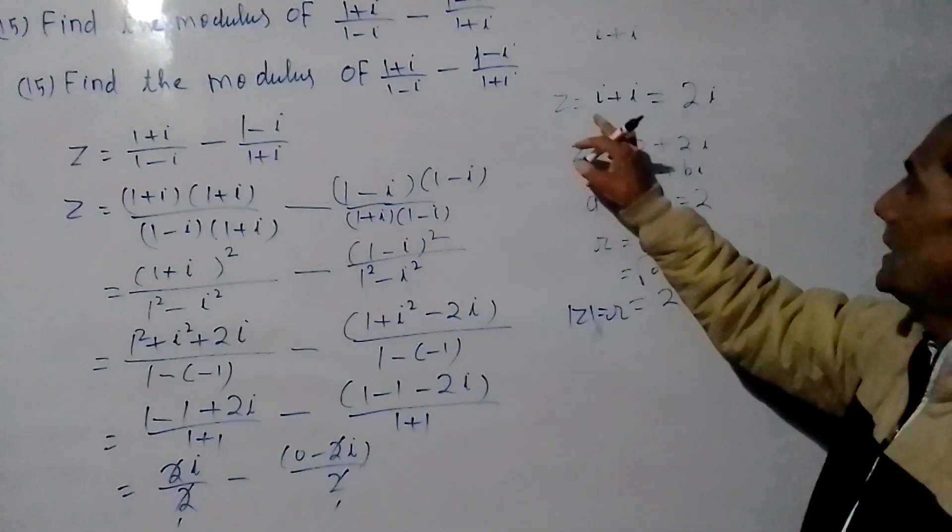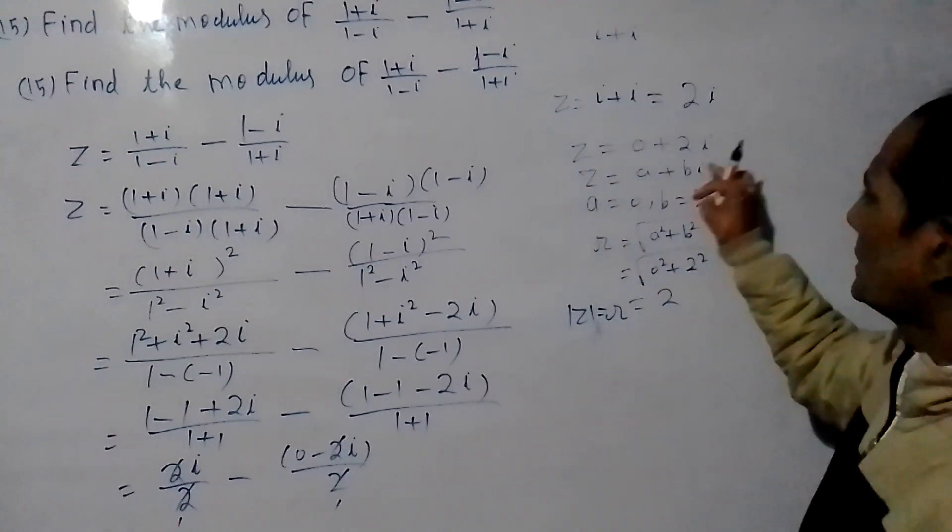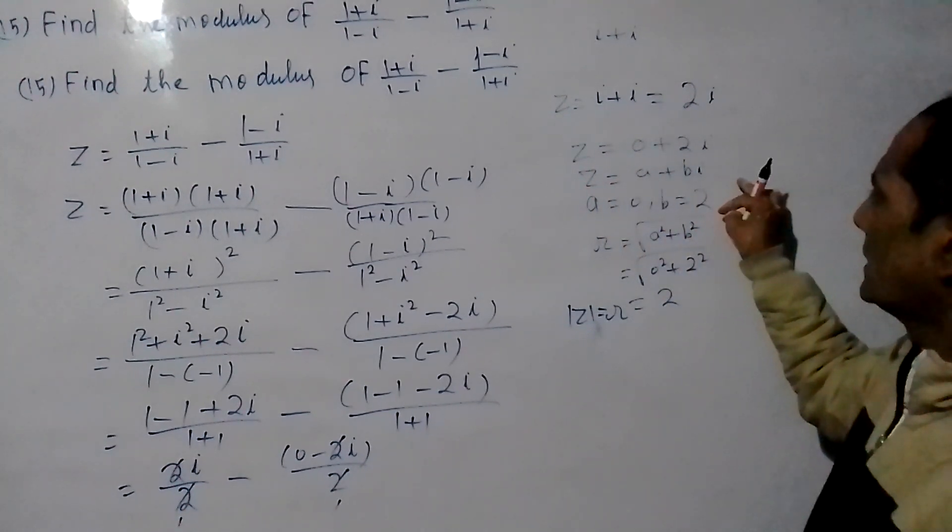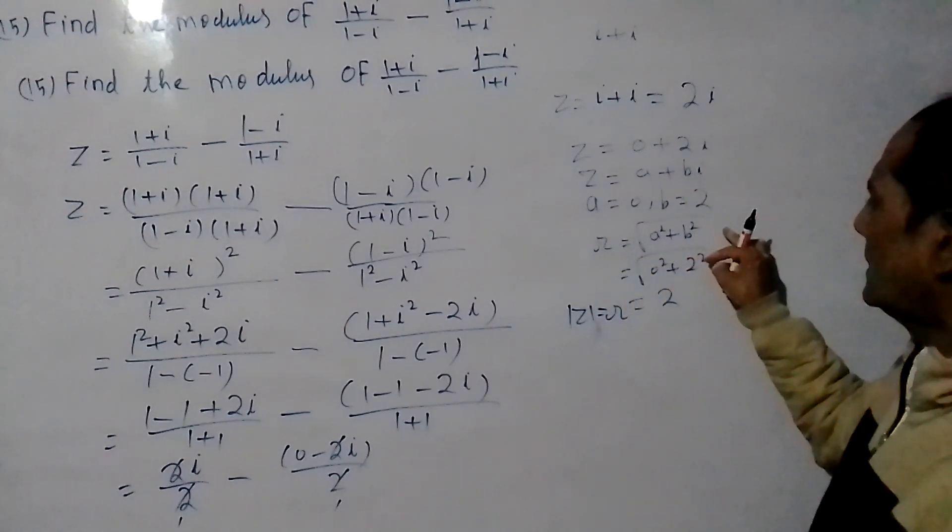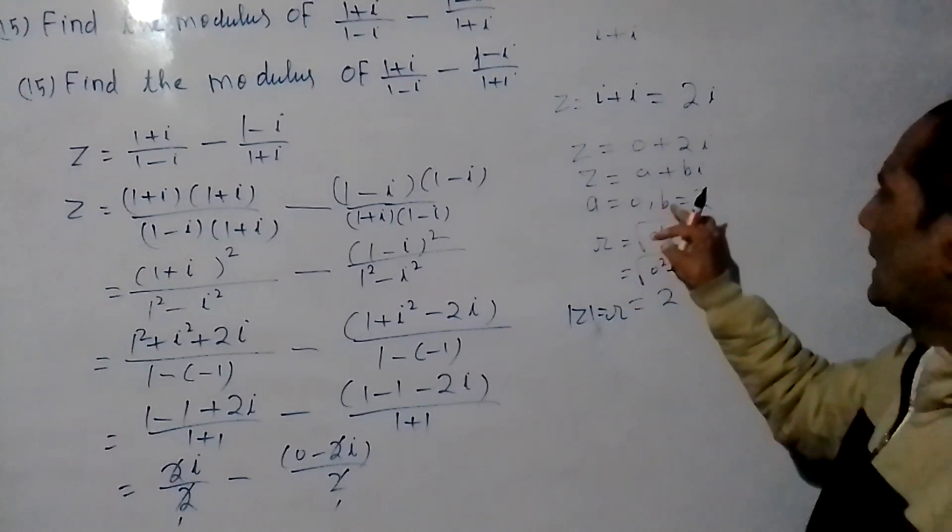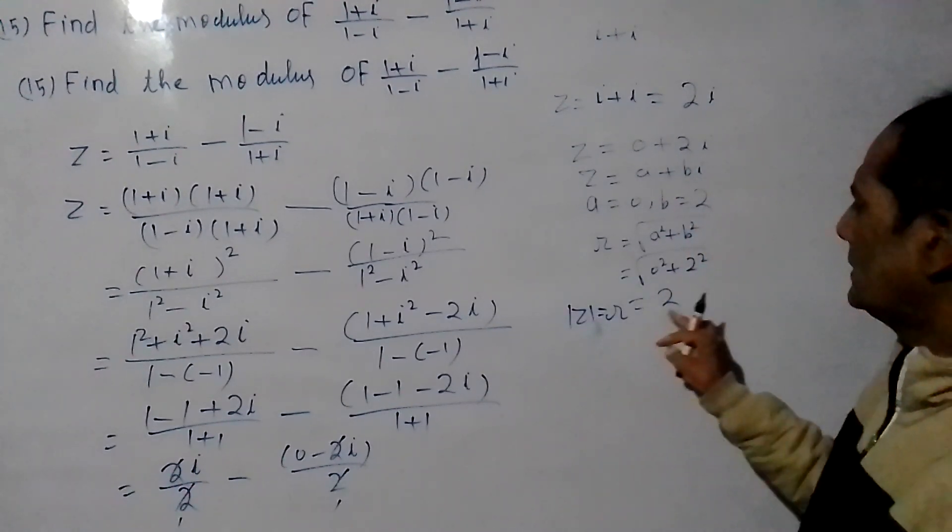Z equals 2i plus 2i. Z equals 0 plus 2i. So A is equal to 0 and B is equal to 2. Modulus is the square root of A squared plus B squared. So modulus equals 2.